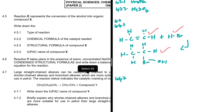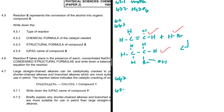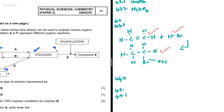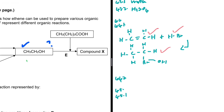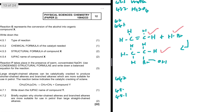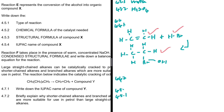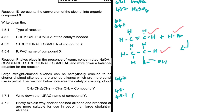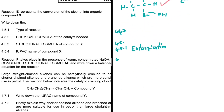For 4.5, reaction E represents the conversion of an alcohol into organic compound X. We start with an alcohol and add what looks like an acid. Alcohol plus acid clearly indicates esterification, so the answer to 4.5.1 is esterification. An alcohol plus an acid in the presence of a suitable catalyst gives you an ester.